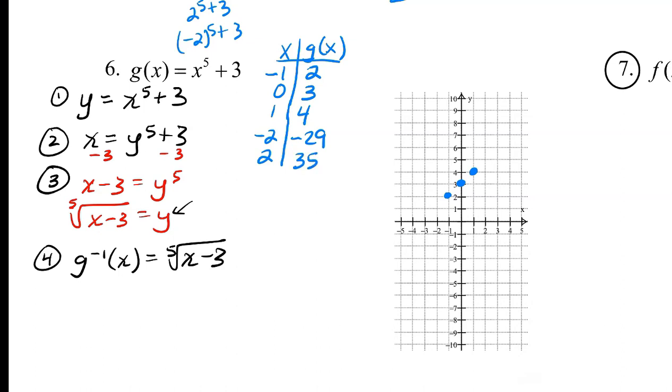So -2 to the 5th plus 3, that would be -32 plus 3, so that would be -29. When we put 2 in, 2 to the 5th is 32 plus 3 is 35. So that's going to be entirely off the graph. So we have a function that looks like this. It's going to go down this way really rapidly and quickly, and then it's going to wrap up this way really rapidly and quickly. So this is the graph of our function g.